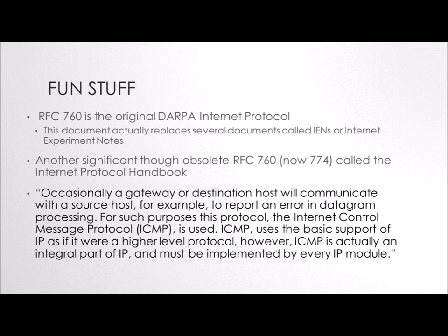Here's a quote from what this RFC is all about: 'Occasionally, a gateway or destination host will communicate with a source host and report an error.' That's what ICMP is primarily used for — there are all kinds of error messages defined in this particular RFC. It is actually implemented in every module that also does IP, so it's encapsulated in IP datagrams, but there's no Layer 4 protocol associated with this. Whenever you implement IP, you've got to implement ICMP as well.